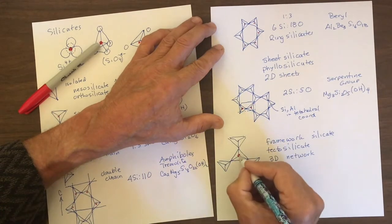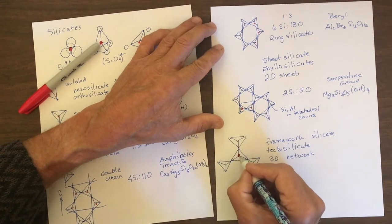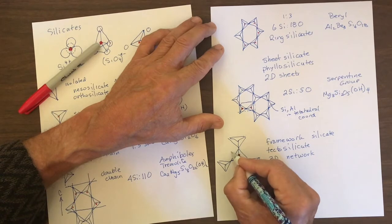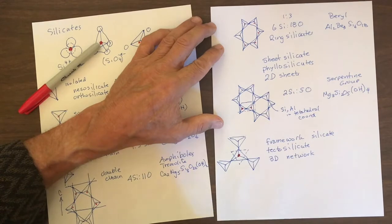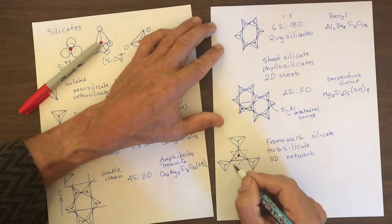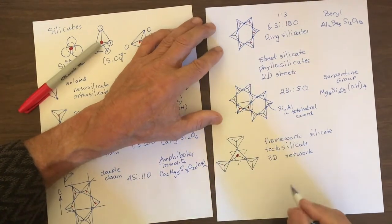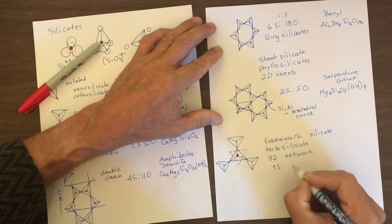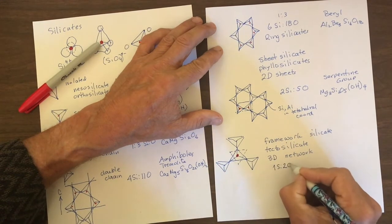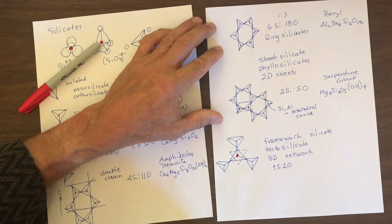In addition, the apex of this tetrahedra shares its oxygen with an overlying tetrahedra. So that means that every one of the oxygens is shared between two silica tetrahedrons. So we have one silica shared with two oxygen, and that's the stoichiometry.